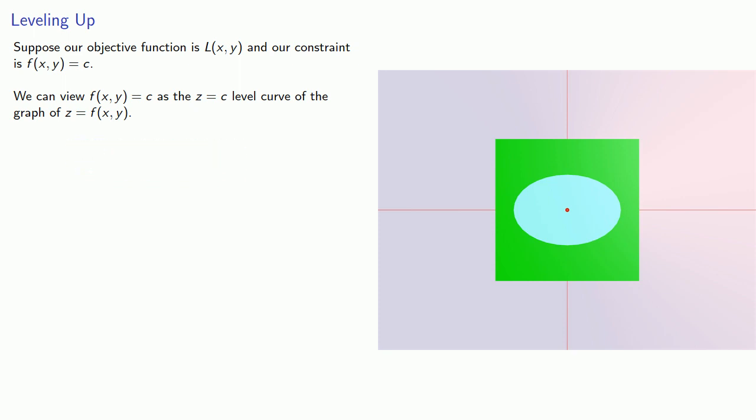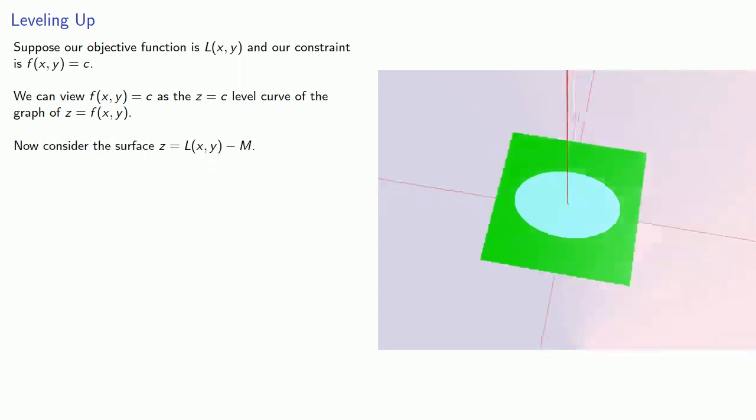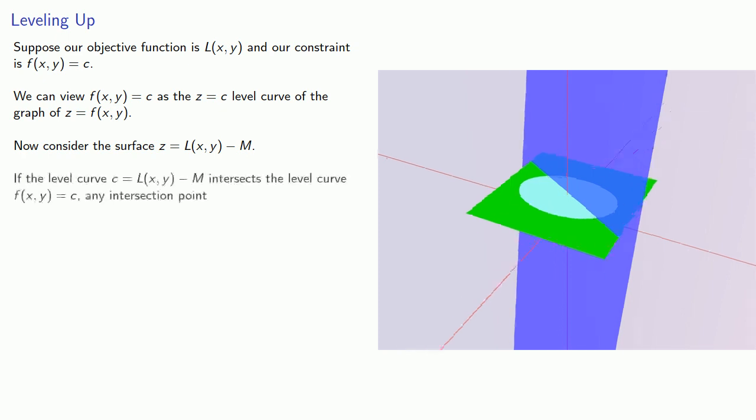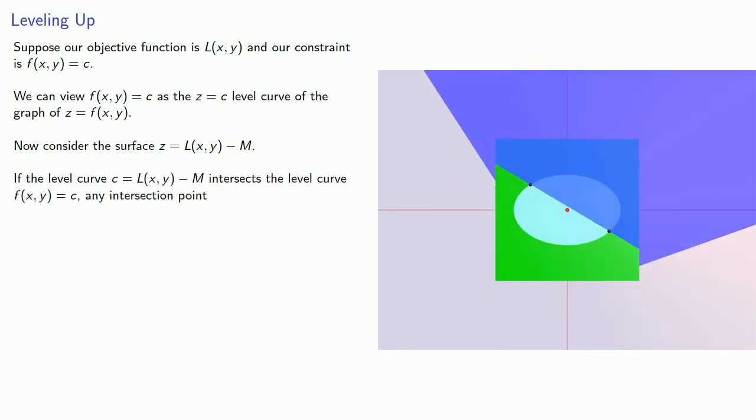Now consider this surface z equals L of xy minus m. If the level curve c equals L of xy minus m intersects the level curve f of xy equals c, any intersection point is on f of xy equals c, so it satisfies the constraint. It also has L of xy minus m equals c, so it gives the objective function the value L of xy equal to m plus c.